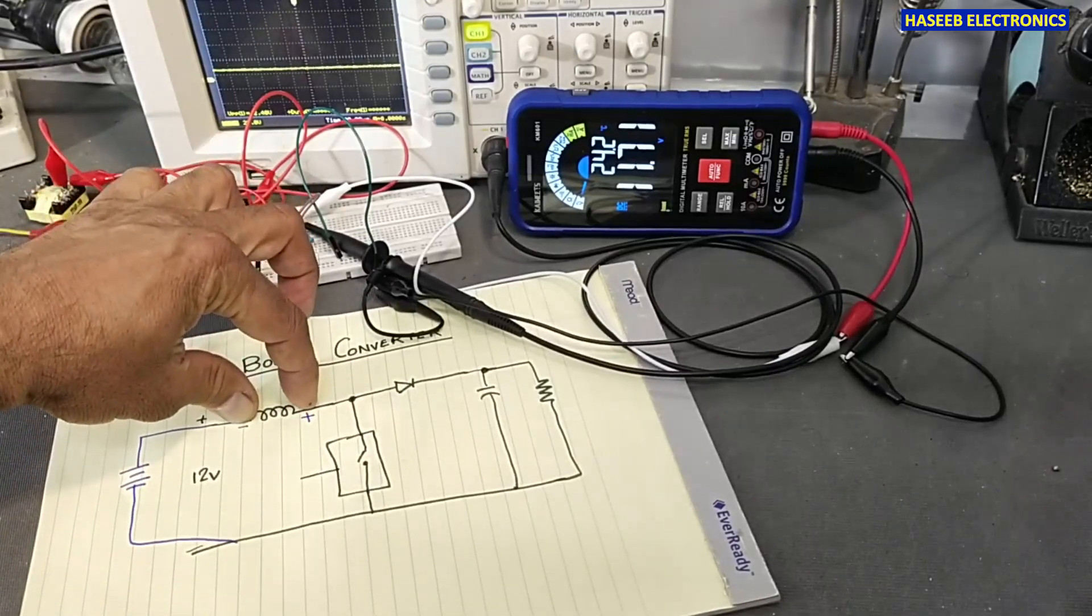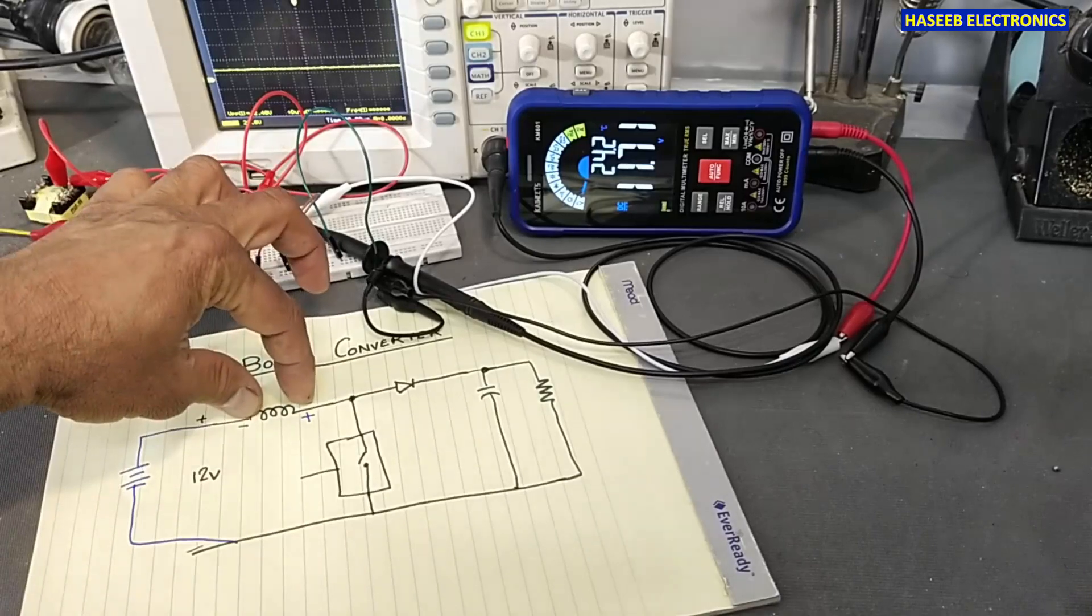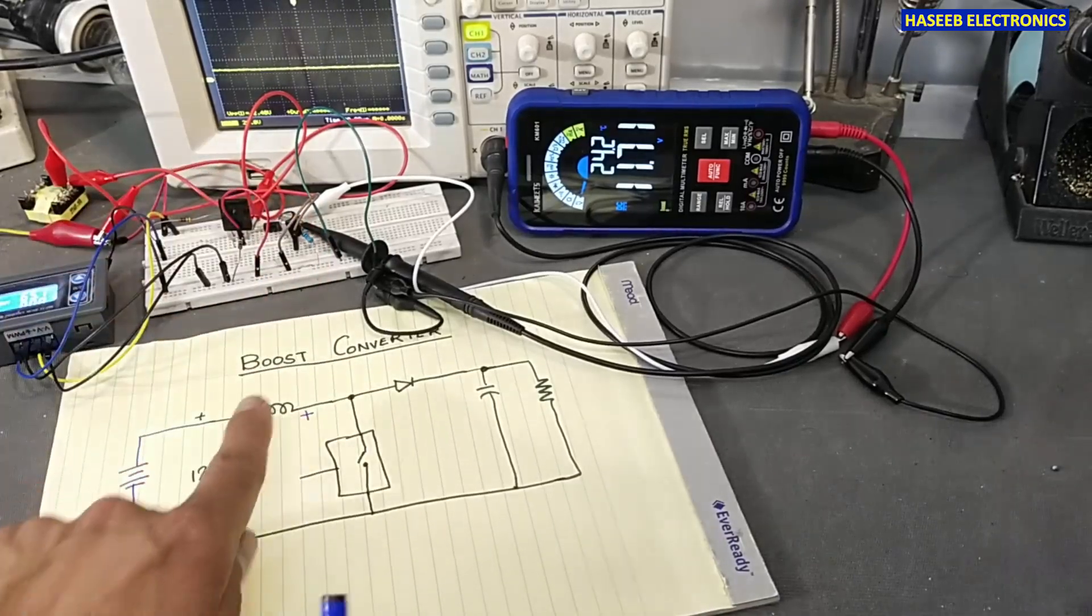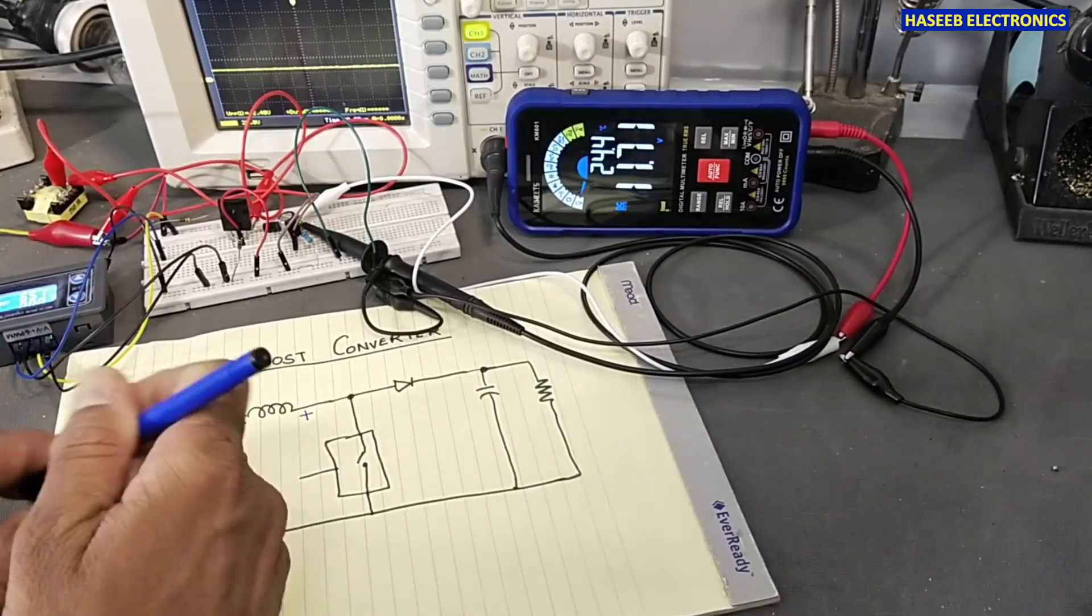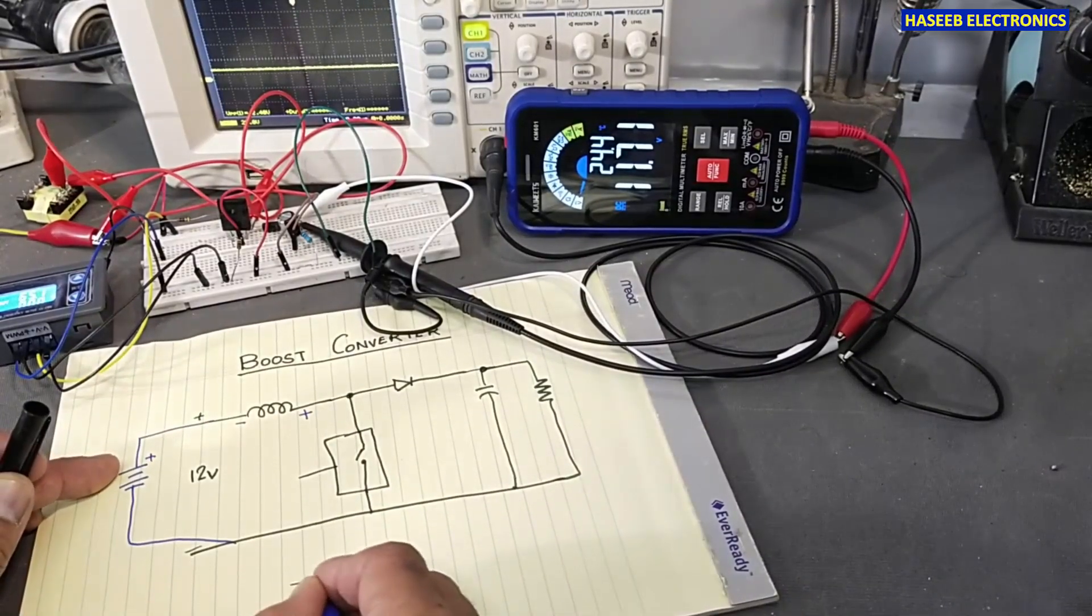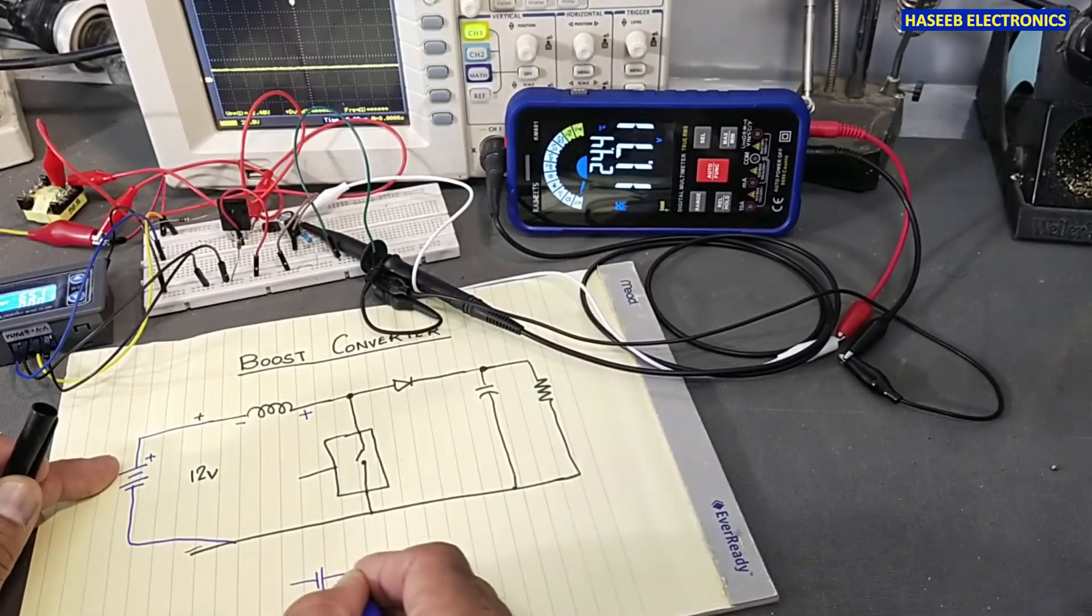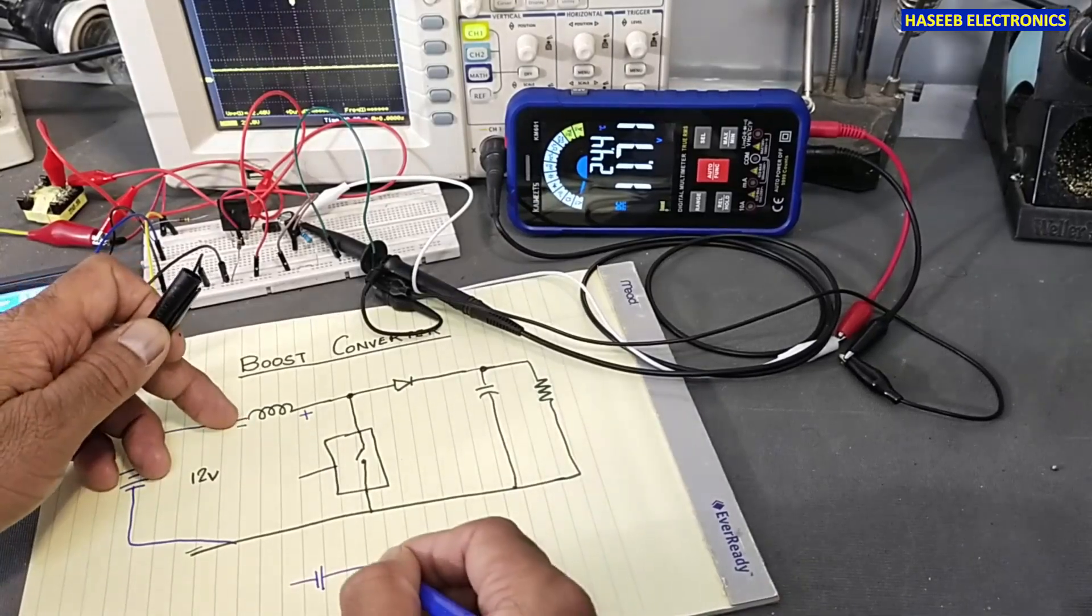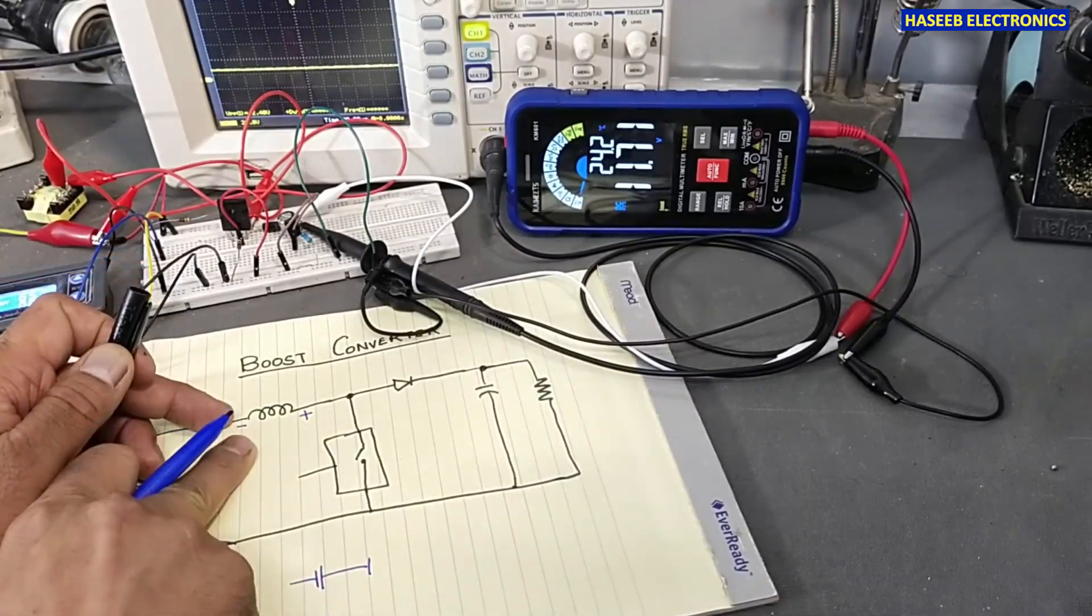Because the created EMF by this inductor will add it together. Why? Because if we see here, we have one battery here - negative, positive - and the second battery negative end is here.